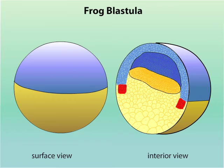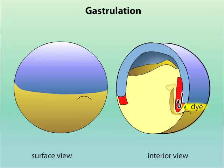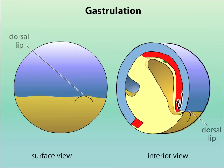At the beginning of gastrulation, a few surface cells called bottle cells move into the interior of the embryo, followed by other surface cells. We can track the movement of cells into the embryo if we add dye to a few surface cells. The movement of cells into the embryo creates a lip called the dorsal lip, over which sheets of cells continue to move inside. At the same time, the ectoderm extends around the embryo surface in a process called epiboly.